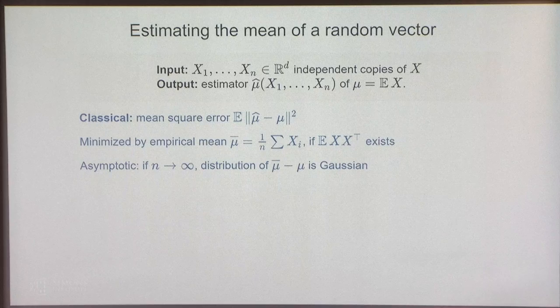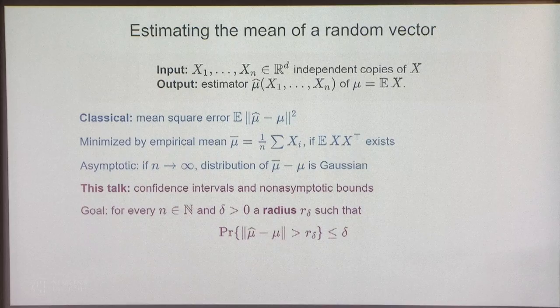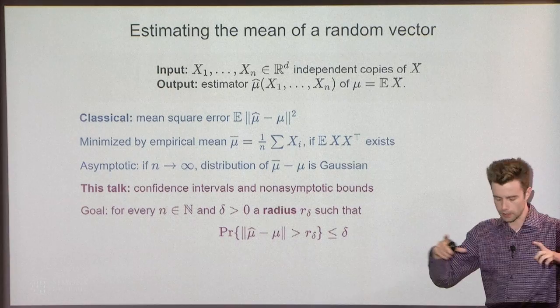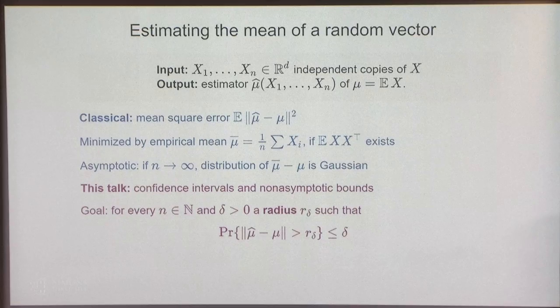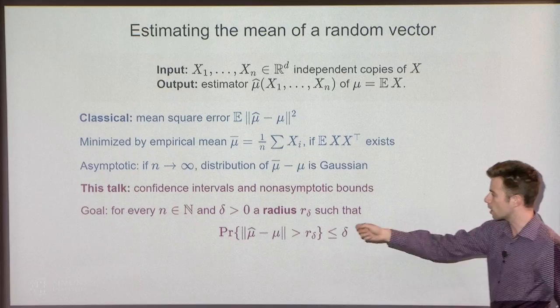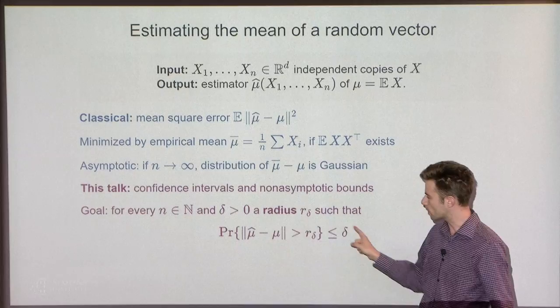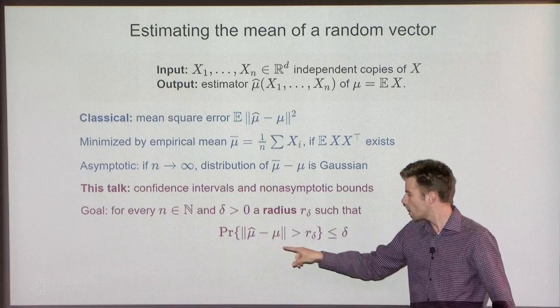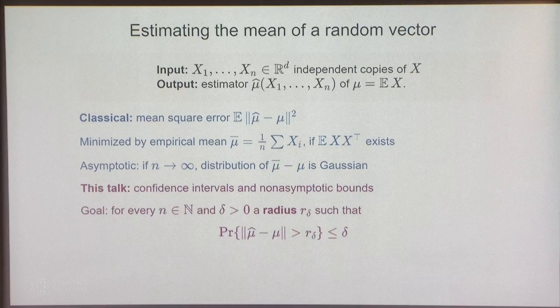In this talk, we're going to aim for a more fine-grained picture in two ways. One is that we will ask for confidence intervals — we want estimators for which we can prove bounds on radii of confidence intervals. And we're interested in non-asymptotic bounds. More precisely, for every number of samples and every desired confidence delta, we want an estimator mu-hat such that we can prove a concentration inequality bounding the distance of mu-hat to mu, with the smallest possible r-delta.